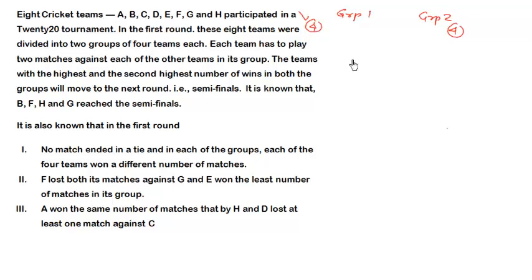If I want to find out how many matches will be within a group: if there are 4 teams and they had played exactly once against each other, there would be 4C2 or 6 matches. But since each team plays against the other twice, the number of matches doubles to 12. So the number of matches in each group will be 12.